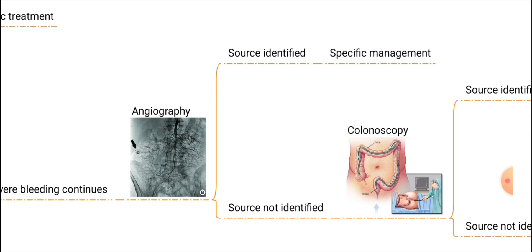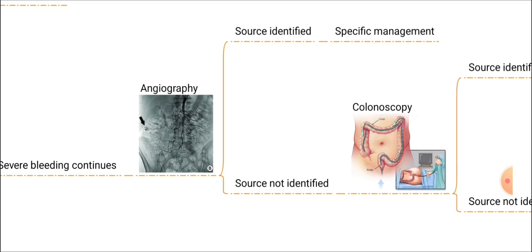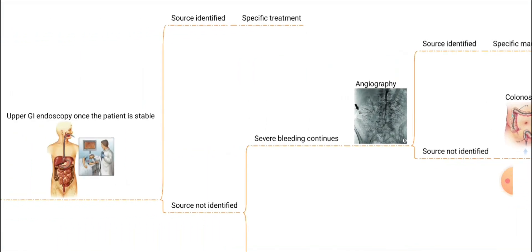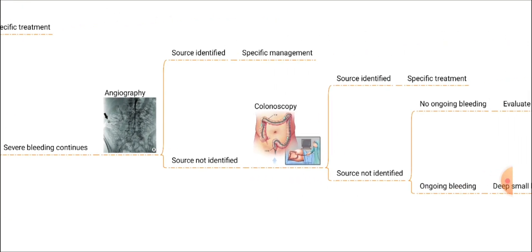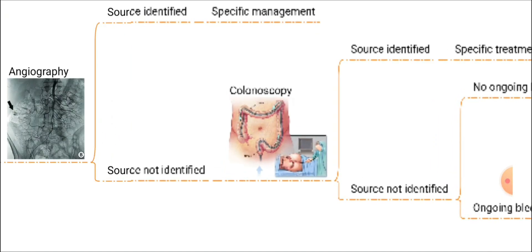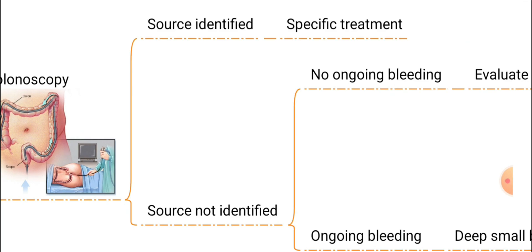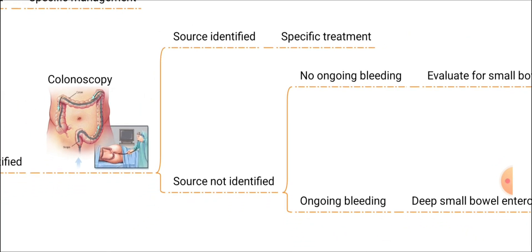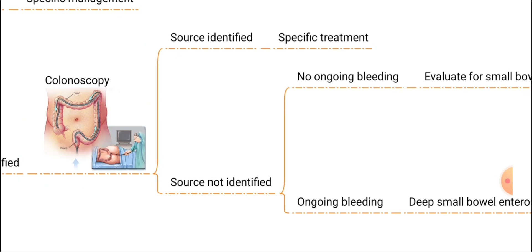If the angiography also does not find any source — the upper GI endoscopy was negative and the angiography also did not identify any source — at that stage, even though bleeding is there, we can proceed with colonoscopy. If any source is identified in the colonoscopy, we can do specific management for that.